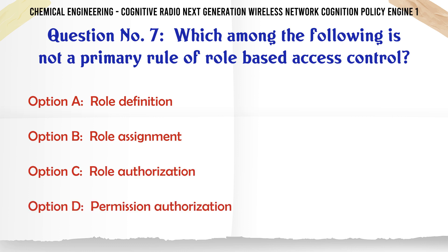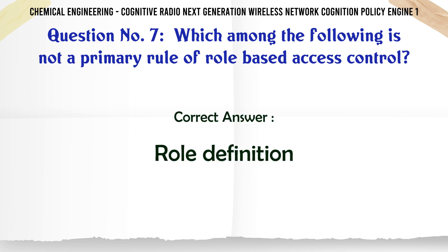Which among the following is not a primary rule of role-based access control? a. Role Definition. b. Role Assignment. c. Role Authorization. d. Permission Authorization. The correct answer is: Role Definition.